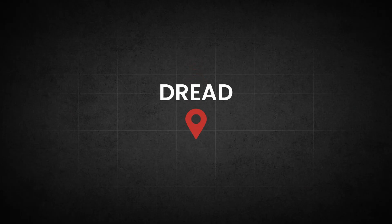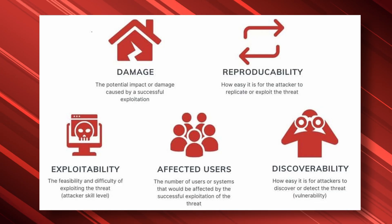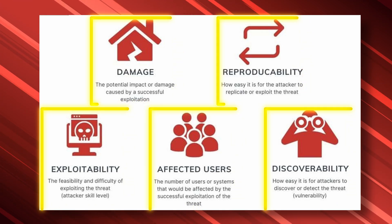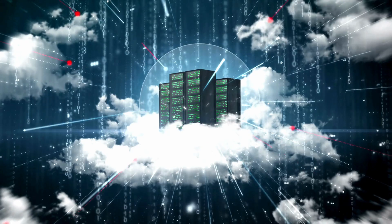The second threat modeling methodology is DREAD — a risk assessment methodology that evaluates the security of software systems or applications against five factors using a scale of 0 to 10. Zero indicates minimal risk or impact, while 10 indicates severe risk or impact. These five factors are based on the methodology's acronym. Evaluating threats using these five factors allows organizations to prioritize their mitigation efforts and allocate resources to address the most critical security risks first. You can use DREAD to assess threats against key assets within your organization — for example, if a threat actor compromises your organization's web server, how would it impact these five factors?